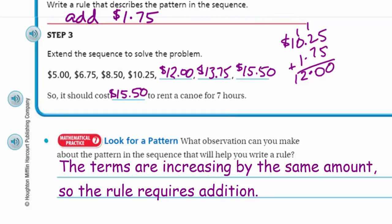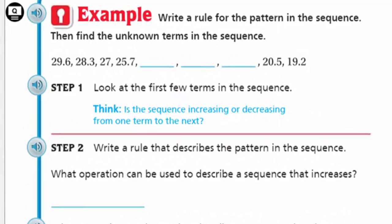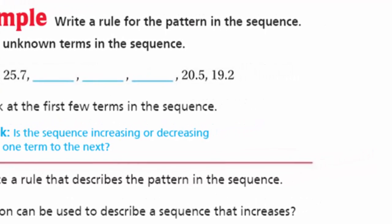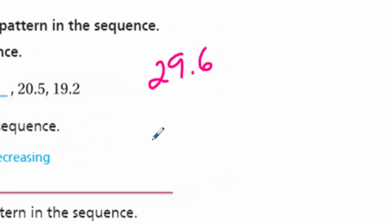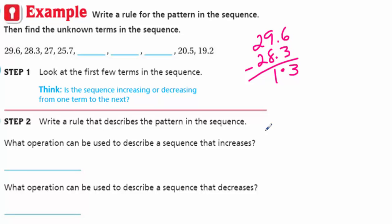It's time for the example. It says, write a rule for the pattern in the sequence. Then find the unknown terms in the sequence. This seems like fun. Let's take a look. We have 29 and 6 tenths, 28 and 3 tenths, 27. You may notice right away, the numbers are decreasing. Yes, they are. They're getting smaller. So one thing we know, there's some subtraction going on. Well, let's take a look and see what that, maybe that difference is between the first two terms. So let's see. We have 29.6 and then we have 28 and 3 tenths. We're going to subtract. Decimal bring it on down. That never gets old. Is that really the pattern and what we call the rule? We don't really know. It's just two numbers. It might not be.